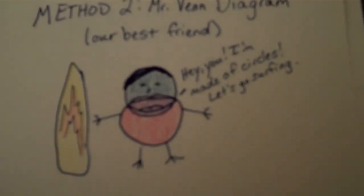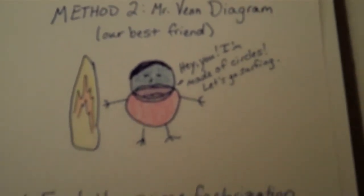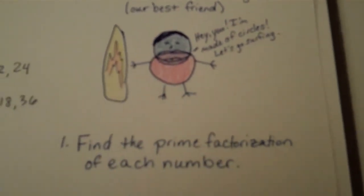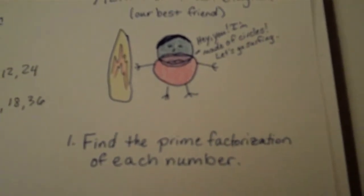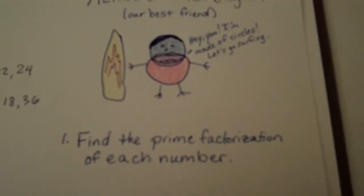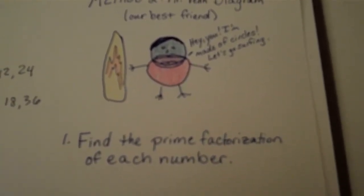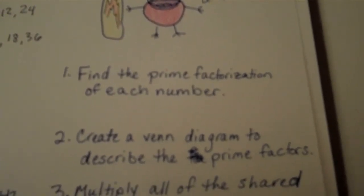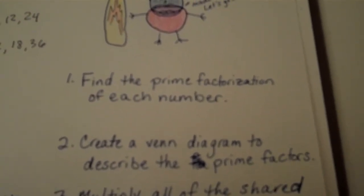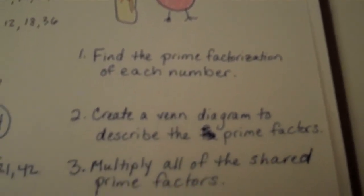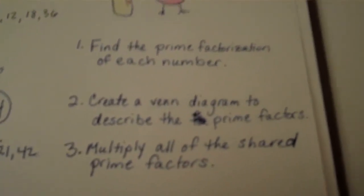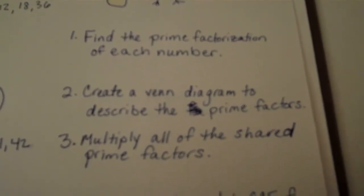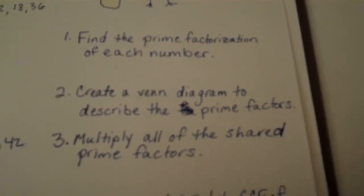Hey you, I'm made of circles, let's go surfing! To use this method, you will first find the prime factorization of each number. Then create a Venn Diagram to describe the prime factors. And finally, multiply all of the shared prime factors.